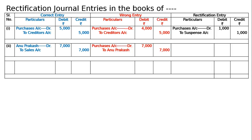Hence Anuprakash will be debited by 7000 and the wrong credit is to be cancelled and again it will be debited by 7000. Hence Anuprakash debited 14000. The credit to Purchase account is to be cancelled — Purchase account credited 7000. And for the correct entry, sales account will be in the credit. Comparing the wrong entry with the rectification entry: Purchase debit cancelled, Purchase credit cancelled; Anuprakash debit 14000 minus credit 7000 gives Anuprakash debit 7000 — the actual correct entry.